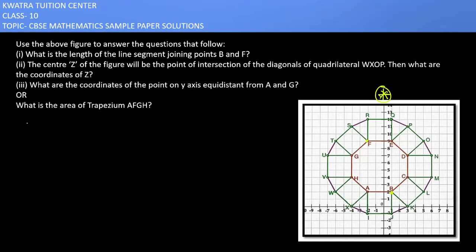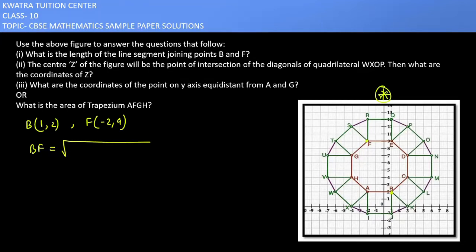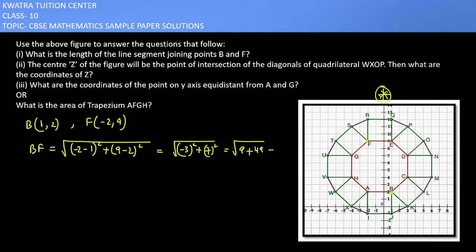We will read both coordinates. The coordinate of B is (1, 2), and the coordinate of F is (-2, 9). So it will be: (-2 - 1)² = (-3)², and (9 - 2)² = 7². So 3² is 9, and 7² is 49. So 9 + 49 gives us √58.